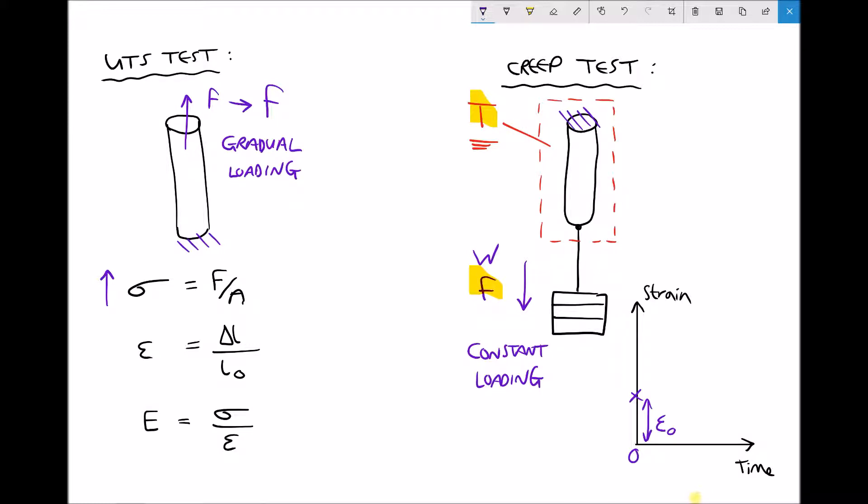Now if creep didn't occur in this piece of material then the strain would remain the same. Recall that strain is change in length over original length. We see that over on the left hand side. So what we're really saying is that the change of length of the test piece would remain constant.